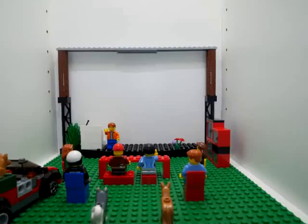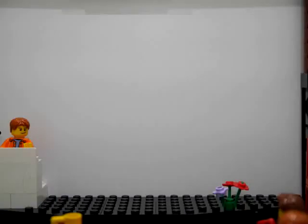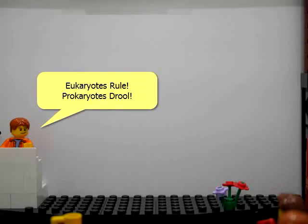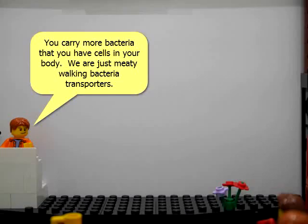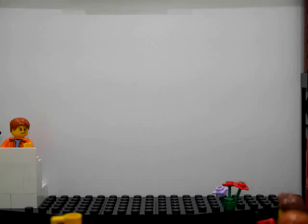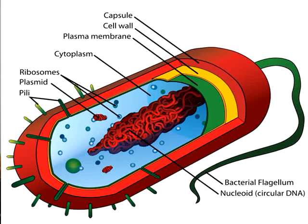Today we're going to start with the essential anatomy of the bacterium in general, then focus specifically on the characteristics of the cell wall. Bacteria are different from all other animal and plant cells in that they are prokaryotes, whereas the rest of us are eukaryotes. The difference is simple: we have a nucleus that surrounds our genetic material, whereas bacteria as prokaryotes do not.